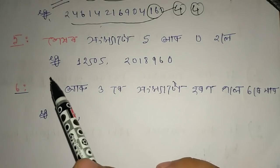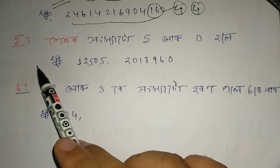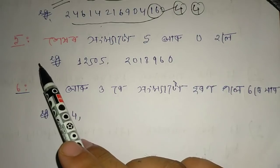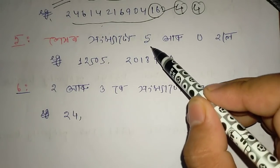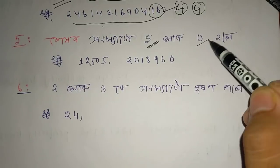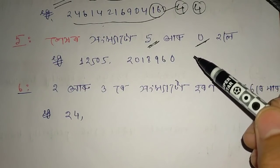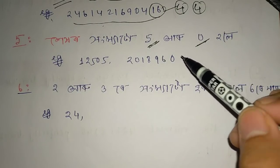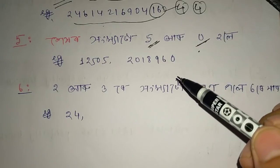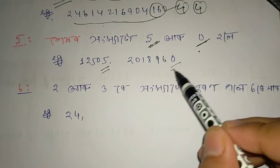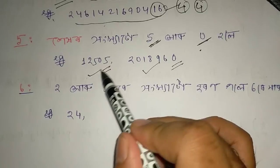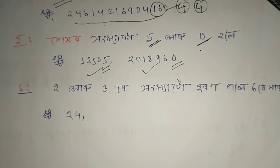Next is divisibility by 5. When you get a number ending in 5, it is completely divisible by 5. This is clear.